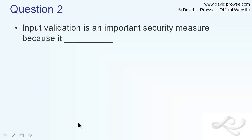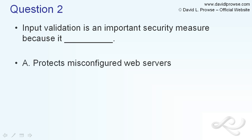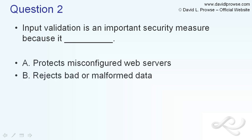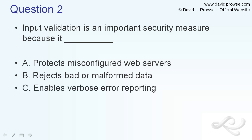Question two: Input validation is an important security measure because it blank. The possible answers are: A, it protects misconfigured web servers; B, rejects bad or malformed data; C, enables verbose error reporting; and D, prevents denial-of-service attacks.